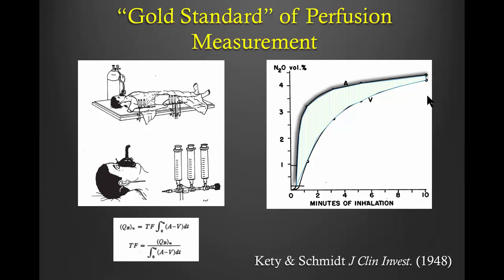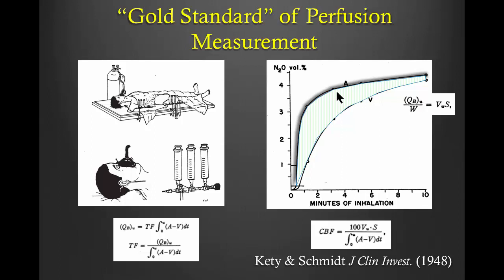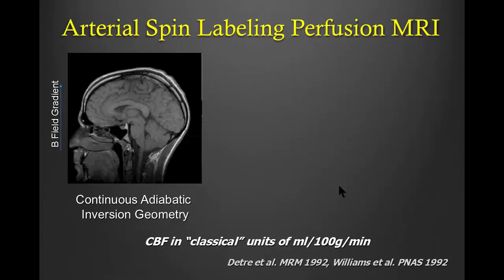At the end of the experiment, assuming the tracer reaches equilibrium between the blood and the brain, you can derive the tracer concentration in the brain using an equation where S is the blood-brain partition coefficient—you will see this frequently in the PET literature. CBF can then be simply derived from this equation. This model is still widely used as a gold standard for validation of various perfusion measurements, mostly in animal models.